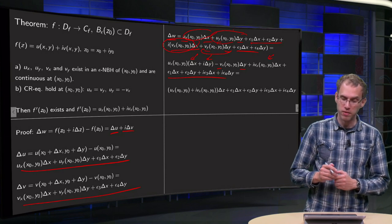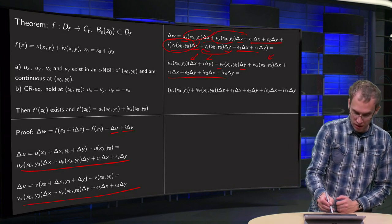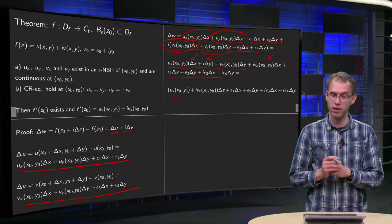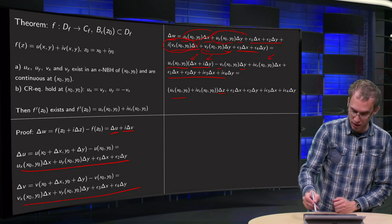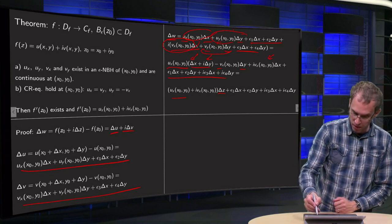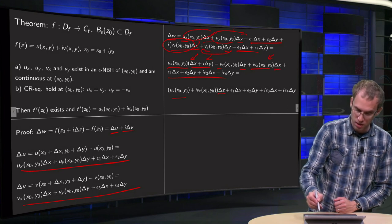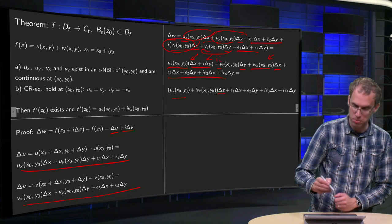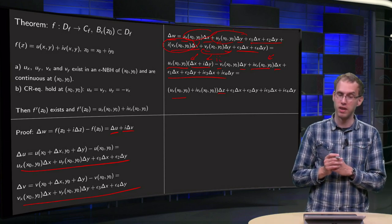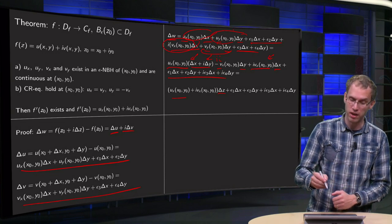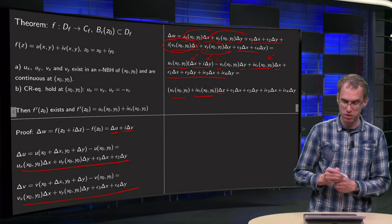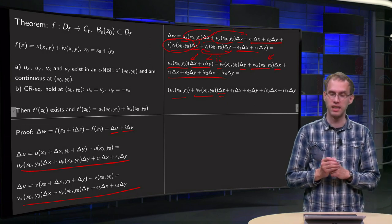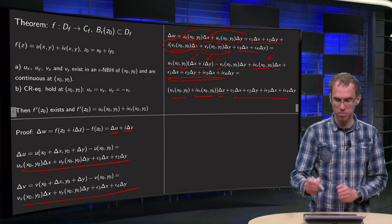We can rearrange a bit further. Here we have ux times Δz, because Δx + i·Δy = Δz. And over here we have i·vx·Δx plus, using minus one equals i·i, we get plus i·vx·i·Δy, which gives i·vx·(Δx + i·Δy), so i·vx·Δz, plus all the remainder terms.